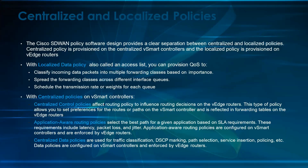Application-aware routing policy selects the best path for a given application based on SLA requirements. These requirements include latency, packet loss, and jitter. Application-aware routing policies are configured on the vSmart controller and are enforced on the vEdge router. The vSmart instructs the vEdge router by sending a copy of the application-aware routing configuration.